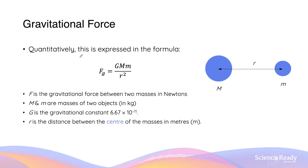Quantitatively speaking, the gravitational force can be described by the following equation. The gravitational force equals G, which is the universal gravitational constant — 6.67 times 10 to the power of minus 11. This number will be very useful in our calculation questions later. This is then multiplied by capital M and smaller m, the two masses between which the gravitational force is present. This is all divided by R squared, which is the distance between the centres of the two masses. The masses are in kilograms and the distance apart is in metres.